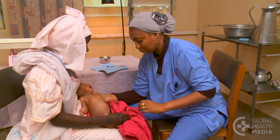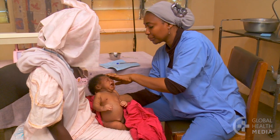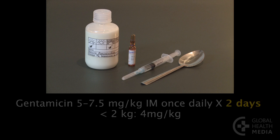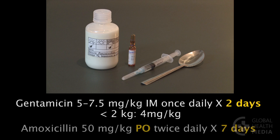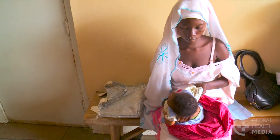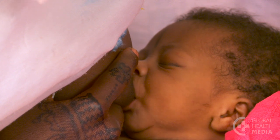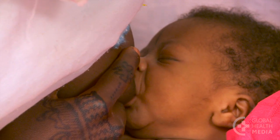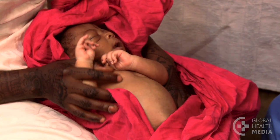Check the baby at each daily visit to be sure he's gradually improving. An alternative option is giving IM gentamicin once daily for just two days, plus amoxicillin by mouth twice daily for seven days. See the baby on day four to determine if he's improving. Advise the mother to give only breast milk every two to three hours and keep the baby warm, and counsel her to return to the clinic immediately if the baby's condition worsens.